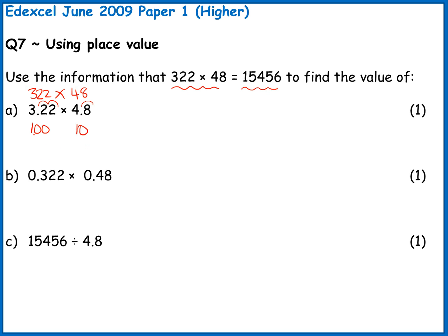So overall I've got two places smaller in one part, one place smaller in my other part. So my overall answer is a thousand times smaller. I'm still going to get the same digits but the place value would have changed. So this will be a thousand times smaller, which means three decimal places changed. So I'm going 1, 2, 3, my new answer is going to be 15.456.